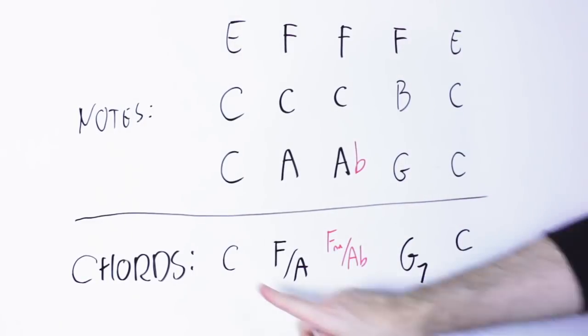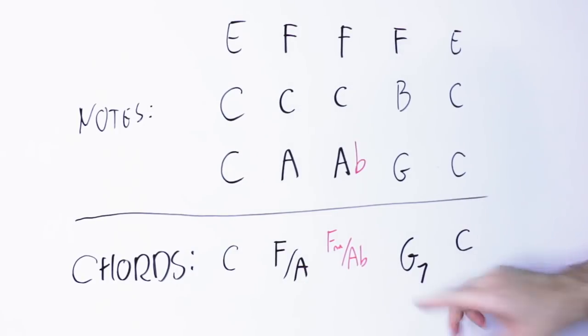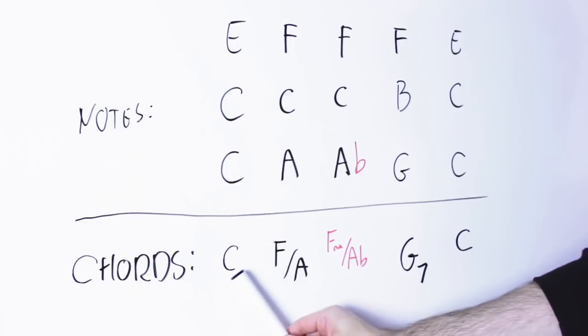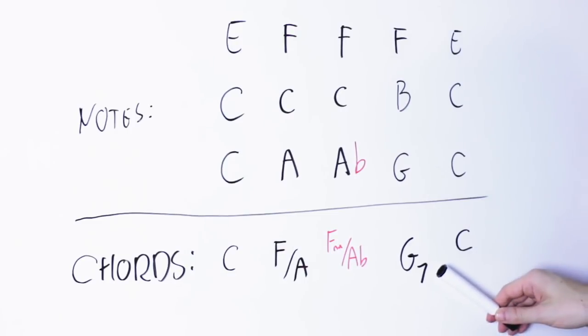So now we can have this: first C major, then F over A, then F minor over A flat, and then G seven and C.